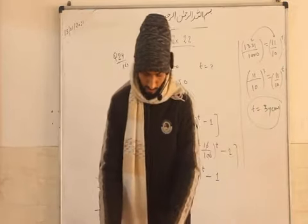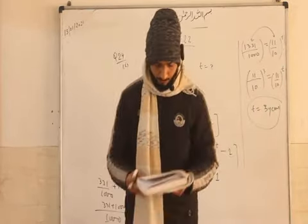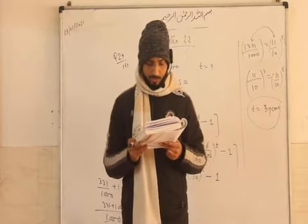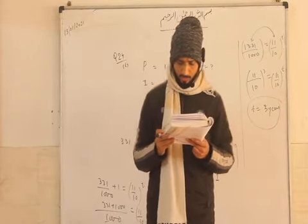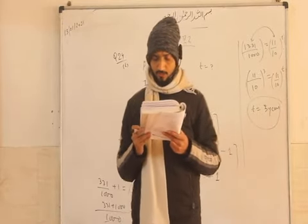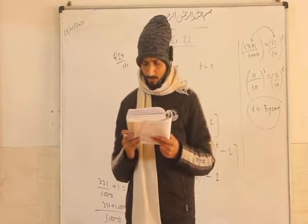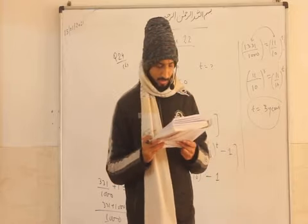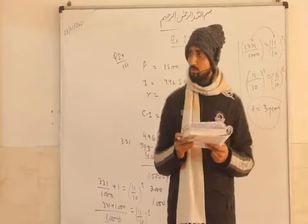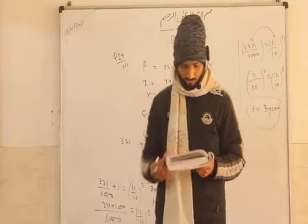Now the second part of this question: find the time in years in which ₹12,500 will produce a certain amount as compound interest at 8%. It follows the same approach as the previous question.